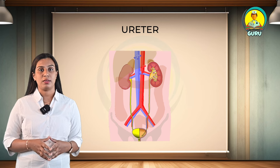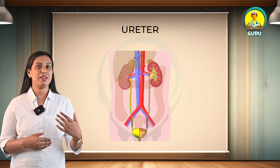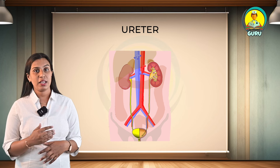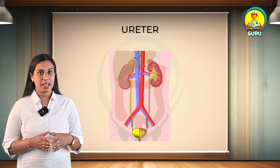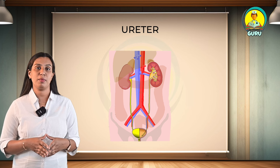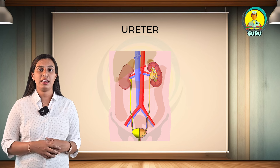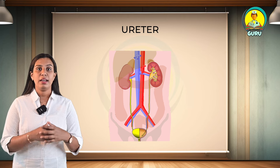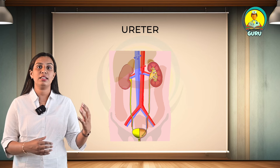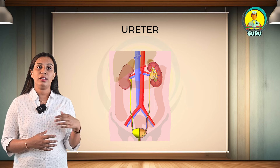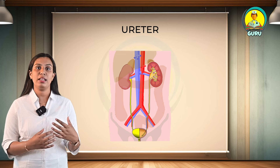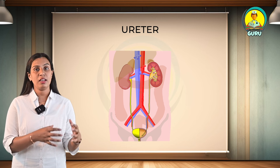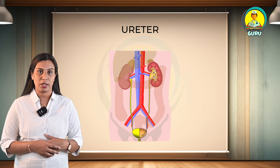Now we can discuss the ureter. The ureters are two muscular tubes that run from the kidneys to the urinary bladder. Each ureter is about 6 mm in diameter and around 25 cm long. The extended upper end of the ureter has a funnel-like structure called the renal pelvis, which lies within the hilum of the kidney and receives the major calyces. The ureter emerges from the hilum of the kidney, travels over the psoas major muscle, and runs vertically downward beneath the parietal peritoneum.